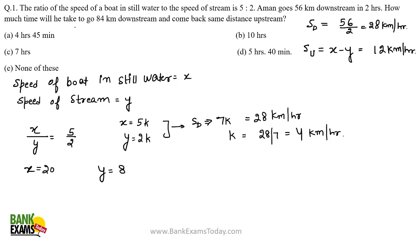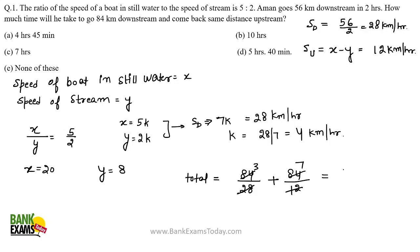Now, the total time to go 84 km downstream and return 84 km upstream = (84/28) + (84/12) = 3 + 7 = 10 hours. So the answer is 10 hours.